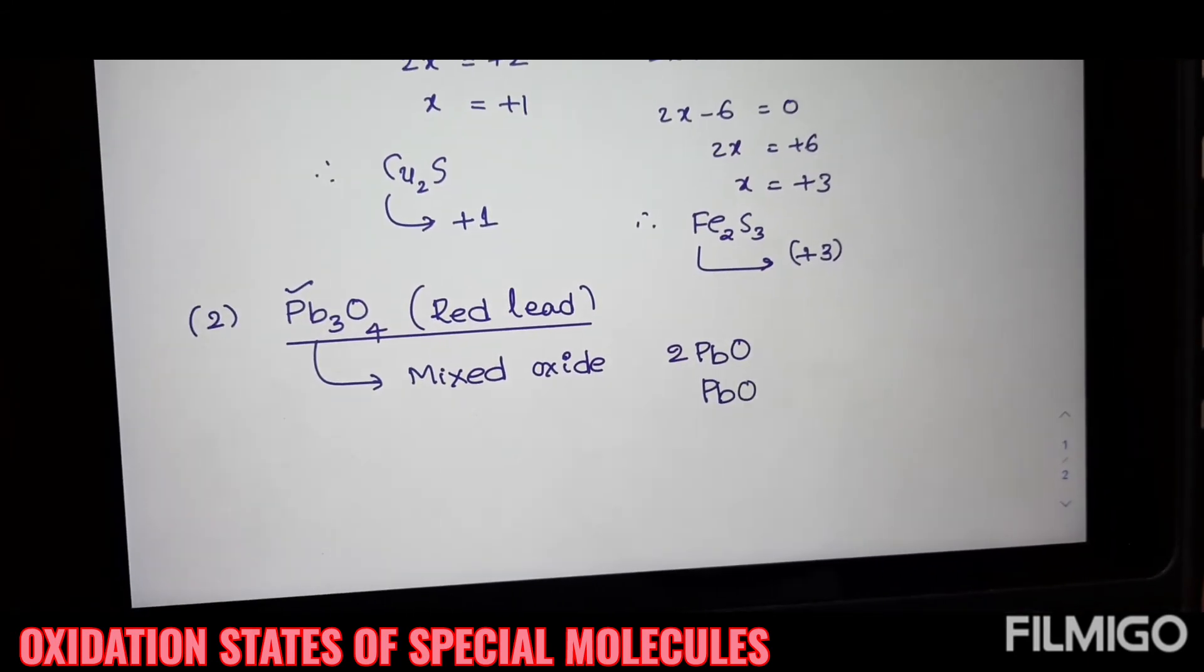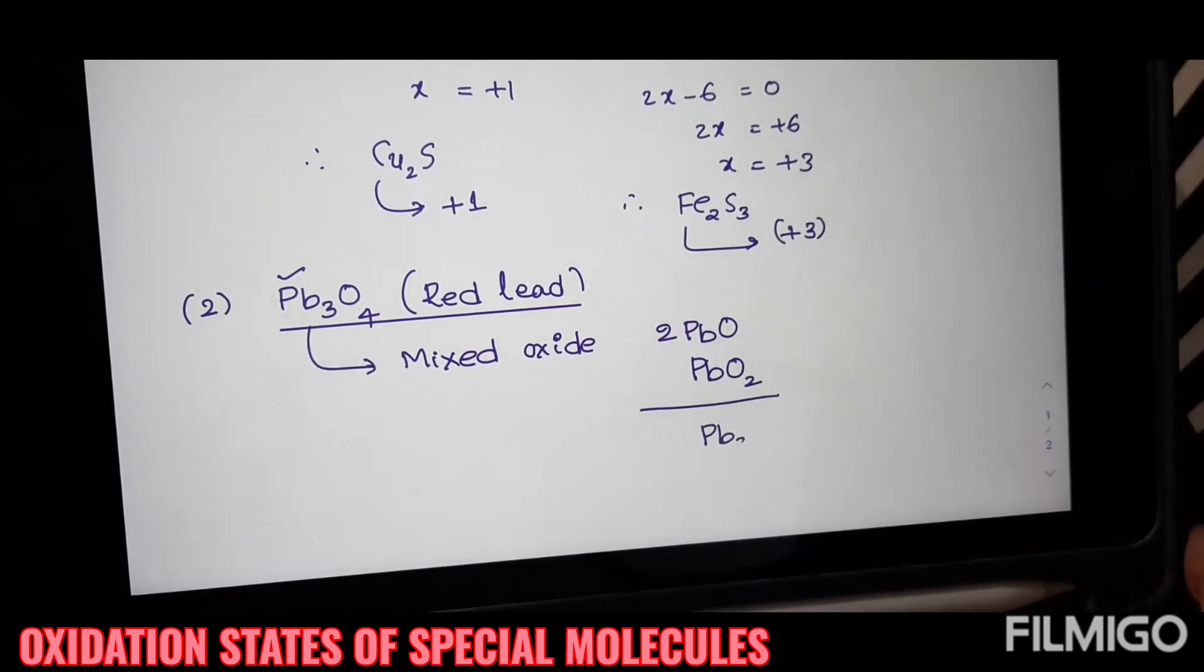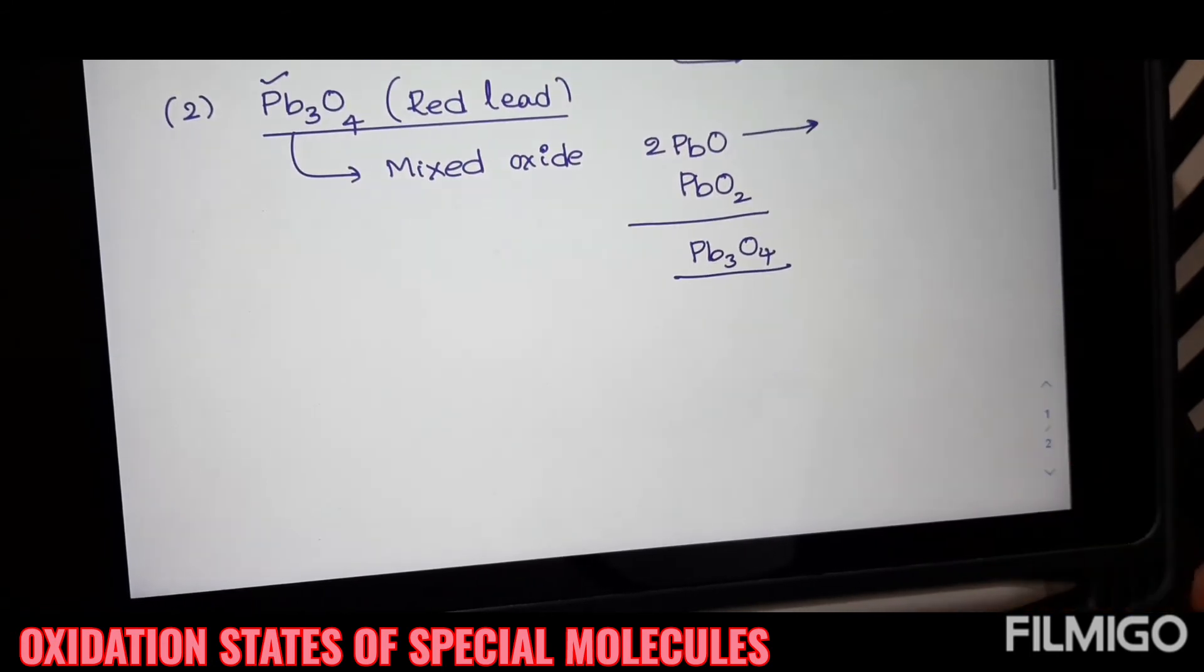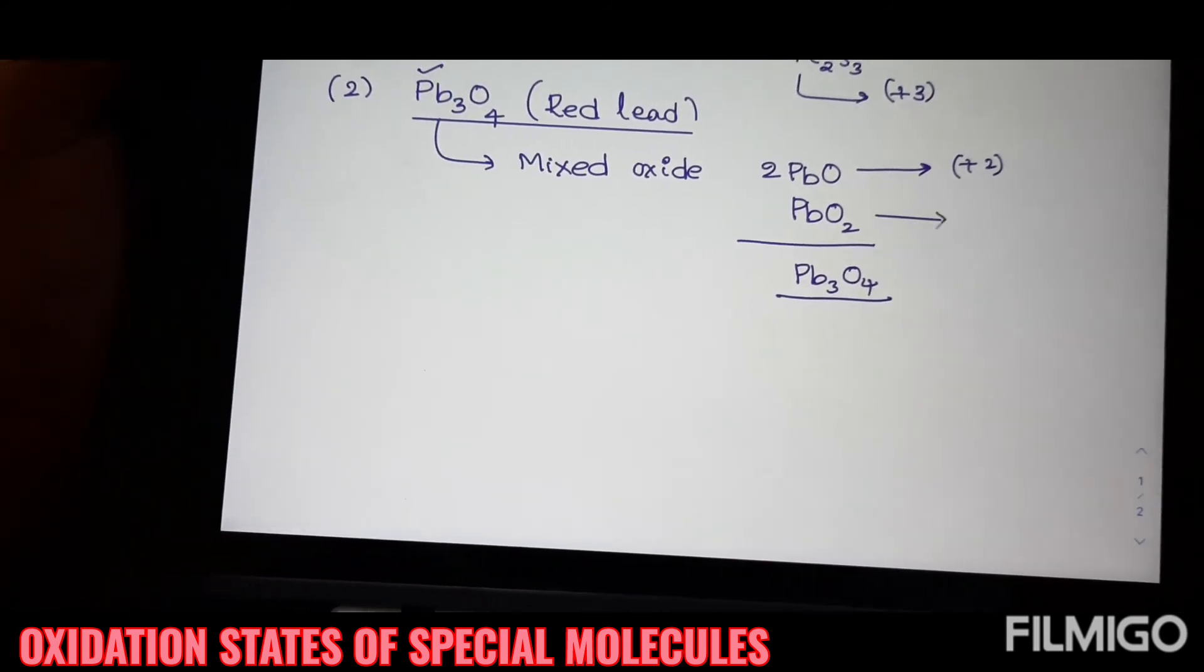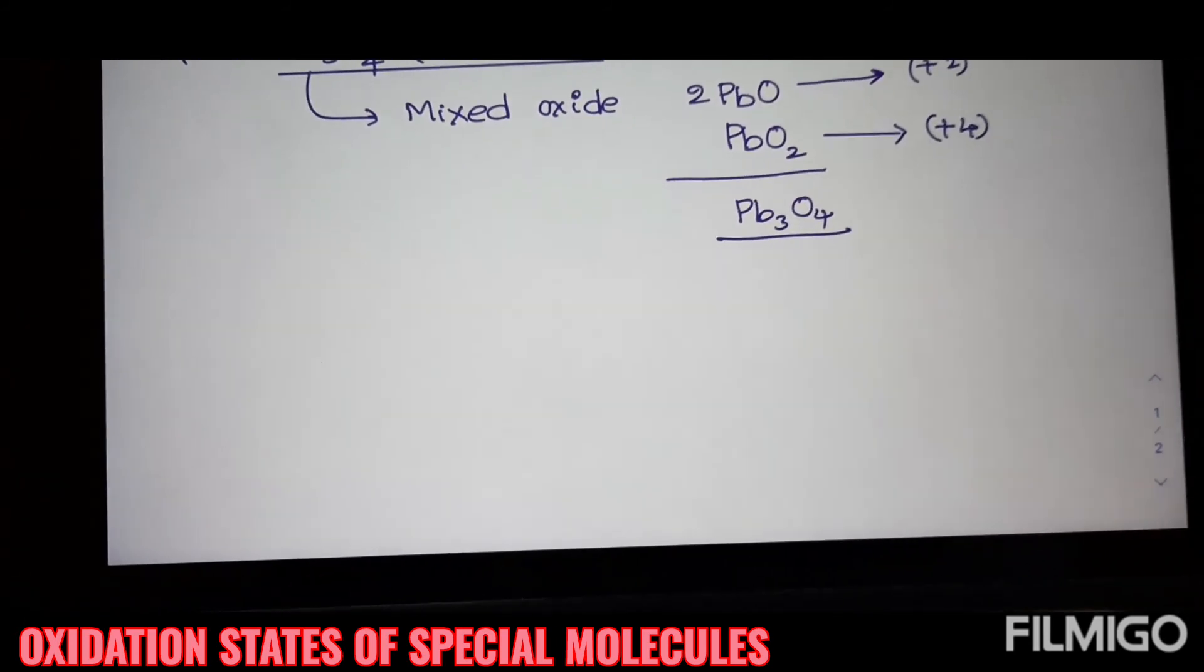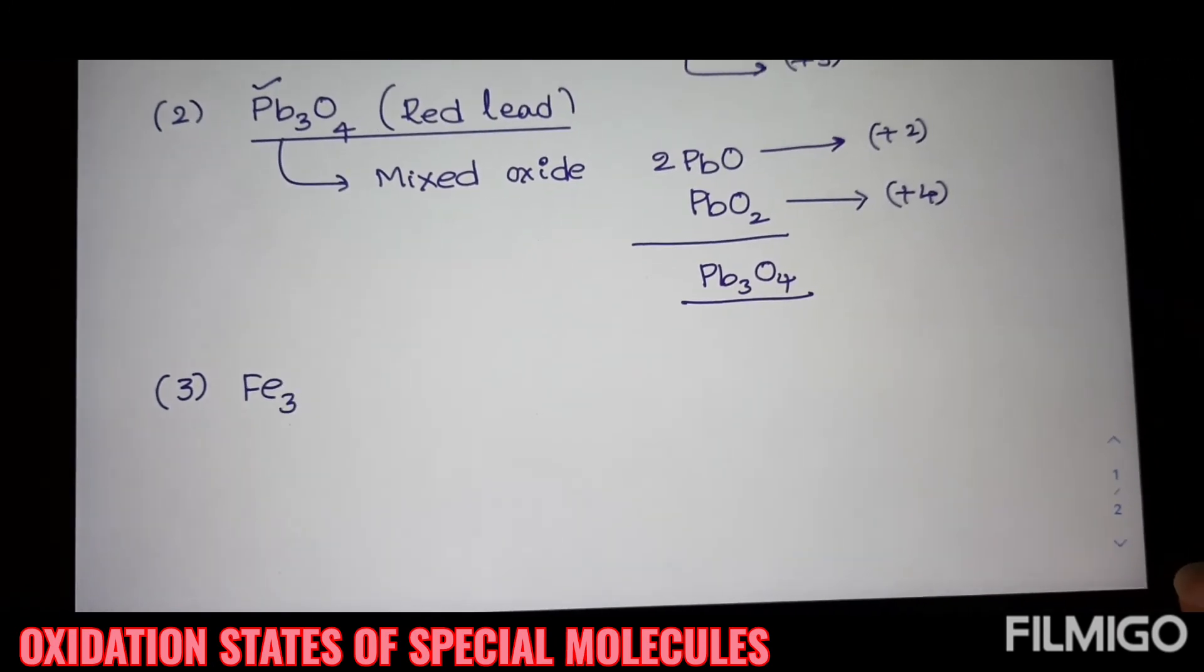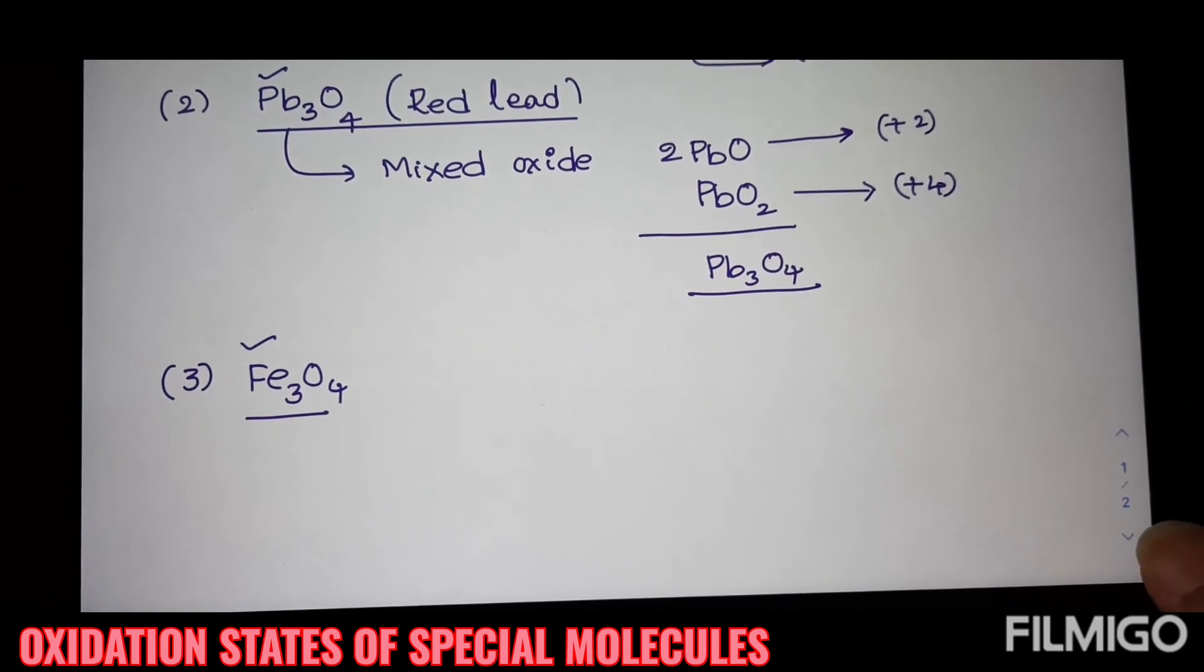It is a combination of 2 moles of PbO and 1 mole of PbO2. An addition of this one, it will give Pb3O4. In the PbO, one Pb has plus 2 state and another PbO2 has plus 4.